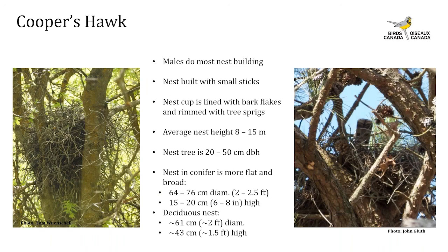An important feature is also the complex vegetative structure of the woodlot. Males do most of the stick collecting and place sticks at the nest site; females watch the process and use the collection area as a feeding platform before egg laying. Nests are built with smaller sticks and finished by lining the cup with bark flakes and fresh green tree sprigs. The average nest height ranges from 8 to 15 meters and the average nest tree diameter is about 20 to 50 cm DBH. Nests in coniferous forests are broader and flatter — 64 to 76 cm in diameter and about 50 cm high; nests in deciduous forests are about 61 cm in diameter and 43 cm high.